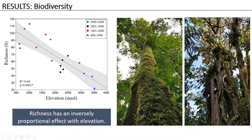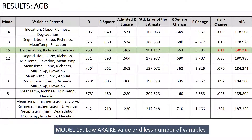In terms of biomass, after analyzing the data with general linear models, I developed several models, but I will present just one that I consider the best because it presents highly significant values and uses the fewest variables that best explain the patterns in biomass that we are observing throughout the gradient. We are using degradation, richness, and elevation.